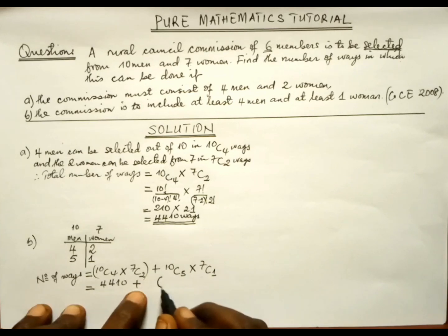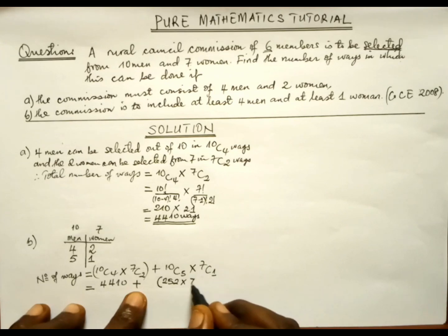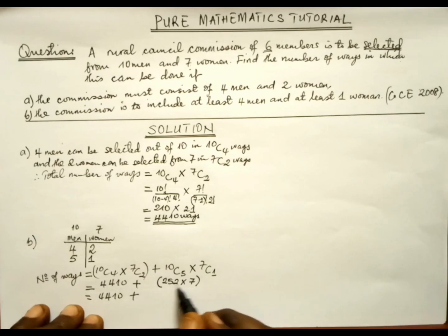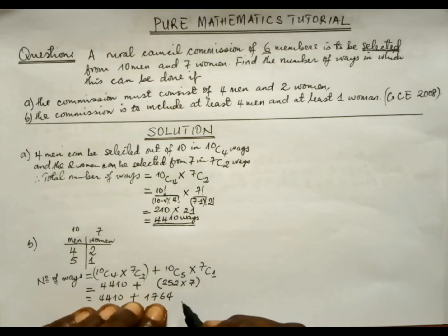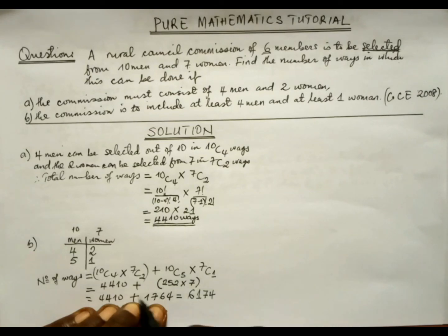From the calculator: 10C5 equals 252 and 7C1 equals 7, giving 252 times 7 equals 1,764. Adding the first result: 4,410 plus 1,764 equals 6,174. Therefore, the total number of ways is 6,174 ways.